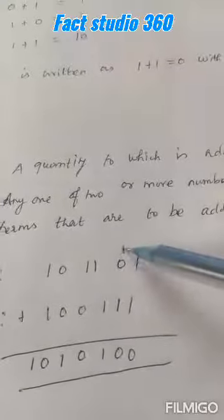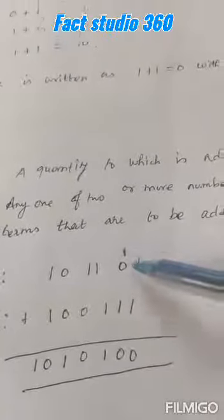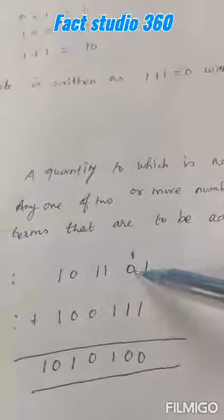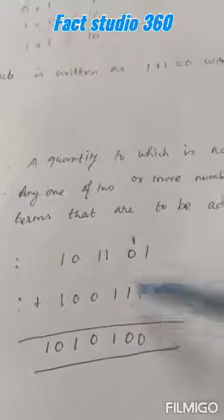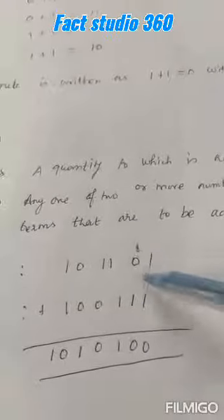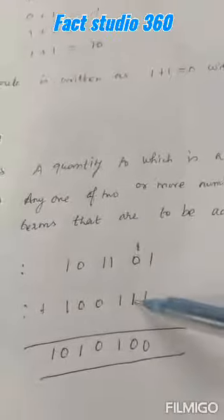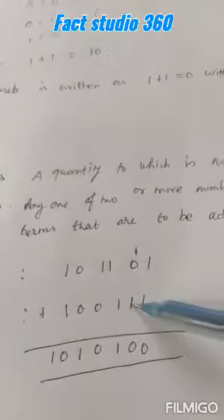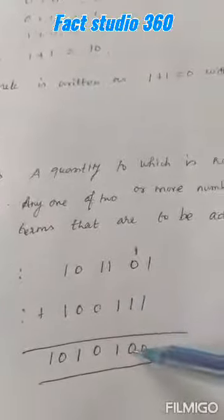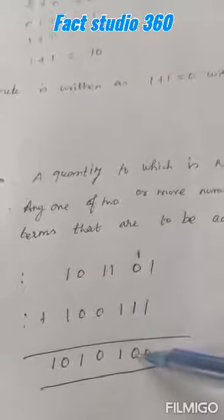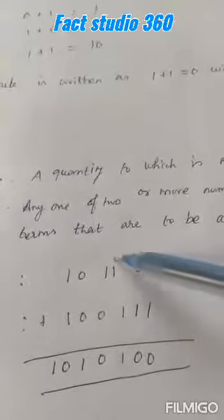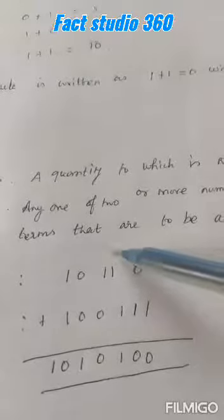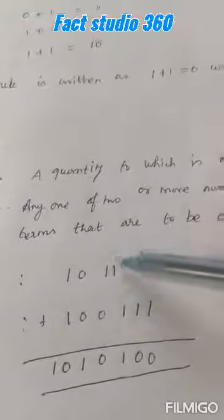Here we have 1. The augend is 1 and the addend is 1, so 1 plus 1 is equal to 10. The fourth rule is applied again — the 0 is placed here and the carry 1 goes to the next term.